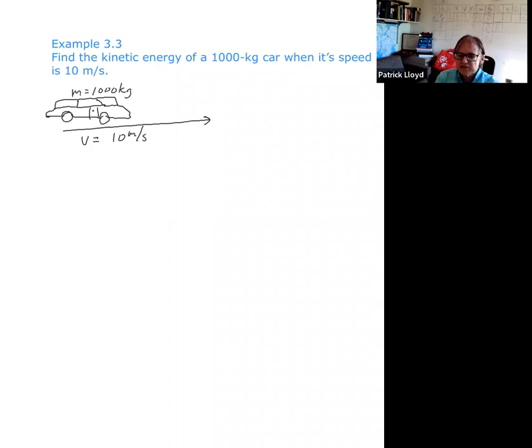Specifically, it's a type of energy called kinetic energy. Kinetic energy is the energy that exists when a mass, something that has mass, is in motion, has a speed or a velocity.